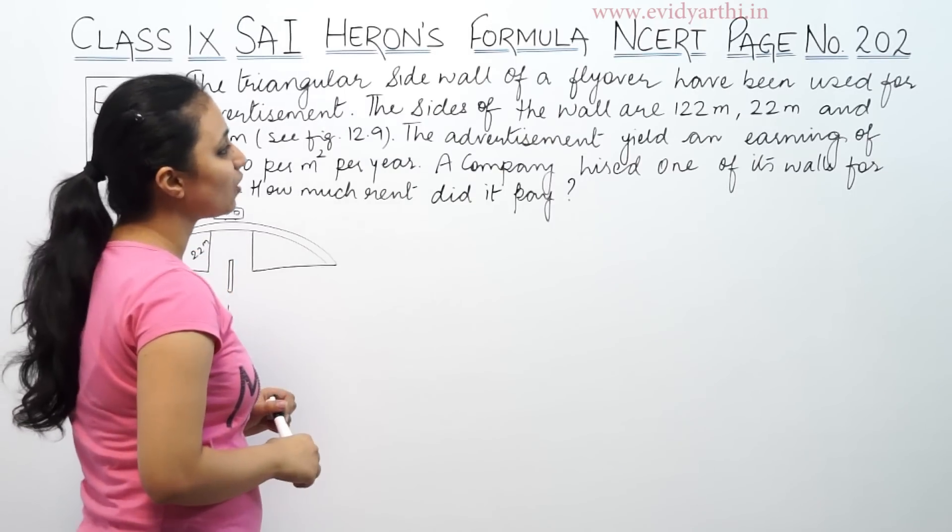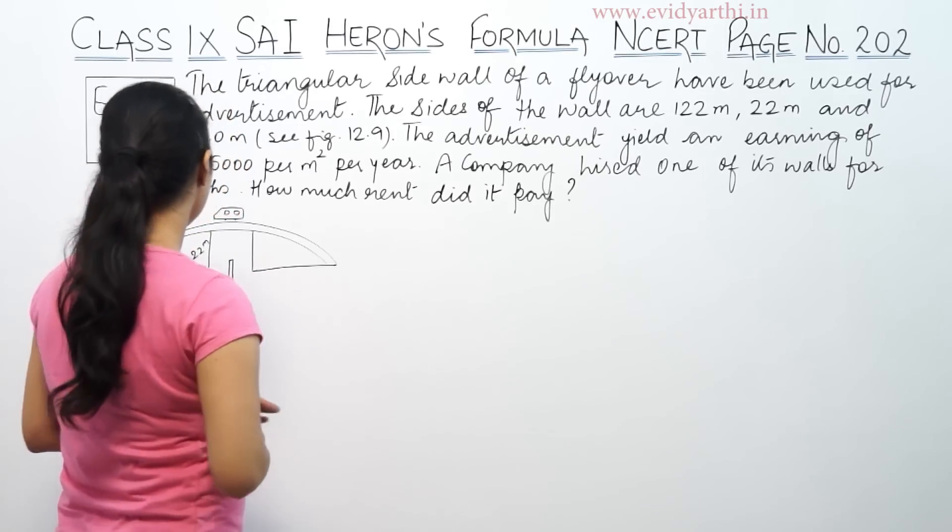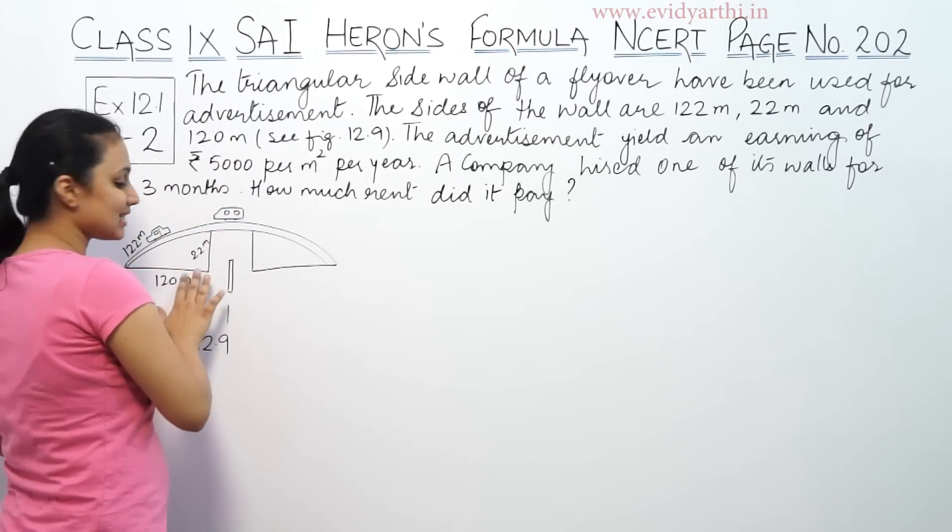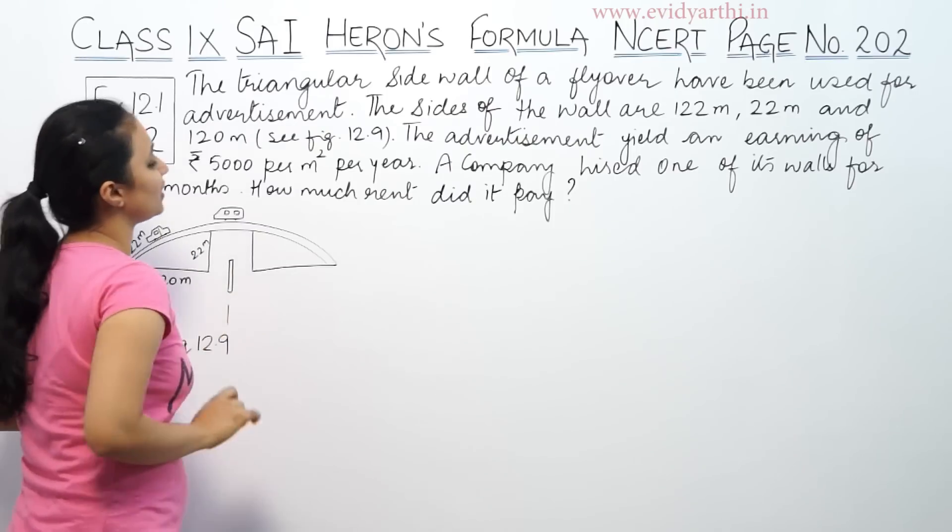The sides of the walls are 122, 22, and 120 meters. So the triangular region has sides given by 122, 22, and 120 meters.